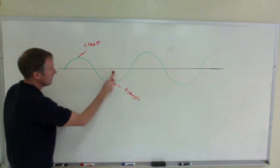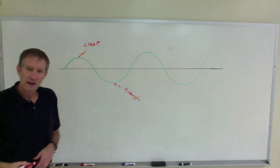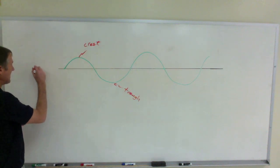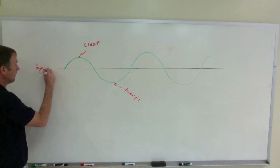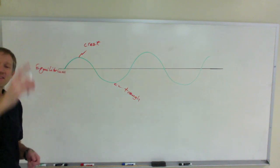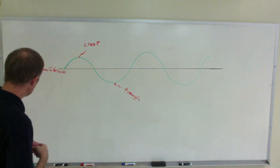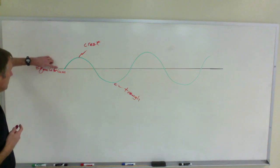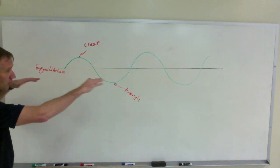This black horizontal line represents the equilibrium position. Equilibrium. Equilibrium. Equilibrium. That's the bell. So that's the equilibrium position.